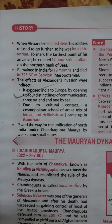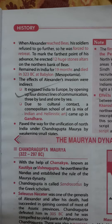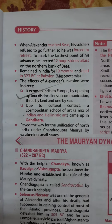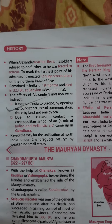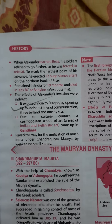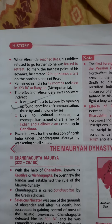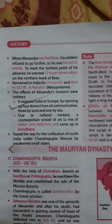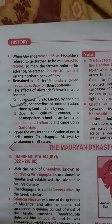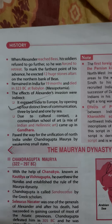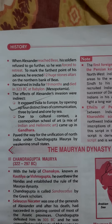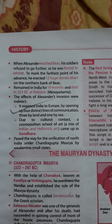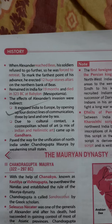Alexander remained in India for 19 months and died in 323 BC at Babylon, or Mesopotamia. The effects of Alexander's invasion were indirect. It exposed India to Europe by opening up four distinct lines of communication — three by land and one by sea. Due to cultural contact, a cosmopolitan school of art, a mix of Indian and Hellenistic art, came up in Gandhara. It paved the way for the unification of North India under Chandragupta Maurya by weakening small states.